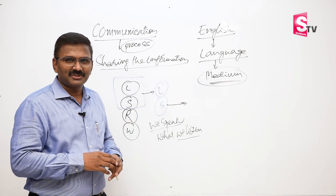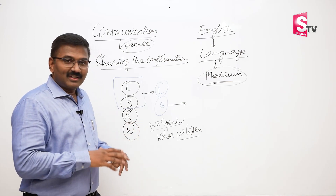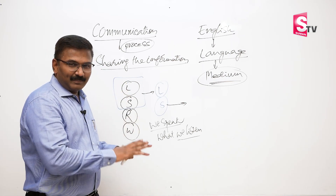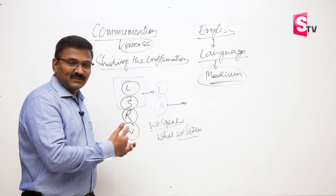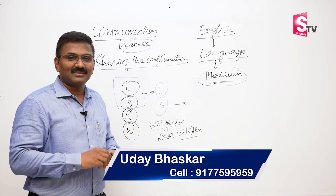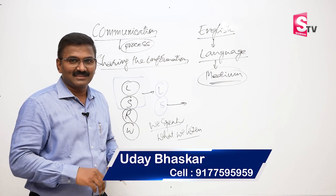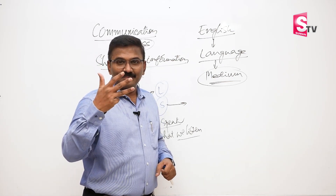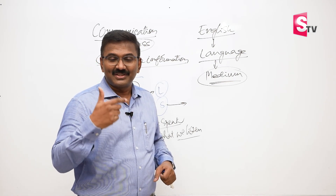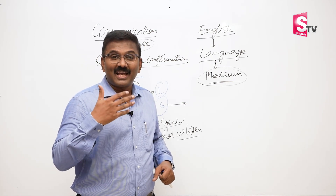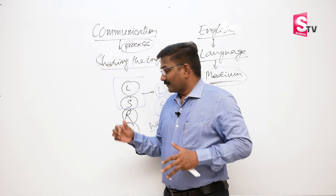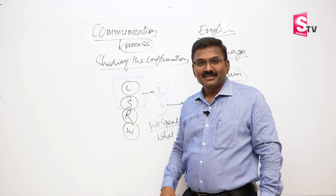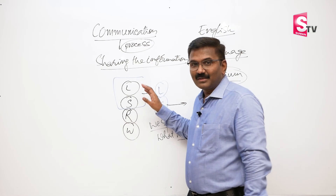English is very simple — it's a language. Besides these four skills, there are more areas you must practice: spellings, pronunciation, vocabulary, grammar, fluency, accent, idioms, phrases, phrasal verbs, and proverbs. Once you learn all of these, you will speak English like anything. That is learning English.